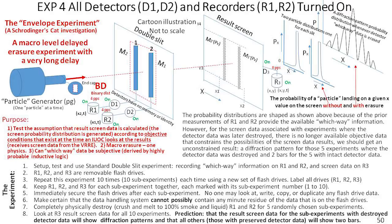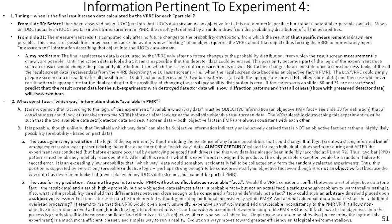Then we'll examine all the result screen data from R3. We hope to find that for experiments where the which-way data was destroyed before anyone saw the results, we'll get a diffraction pattern, and for experiments where the which-way data wasn't destroyed, we'll get a two-bar pattern. We'll see how it comes out when we do it.